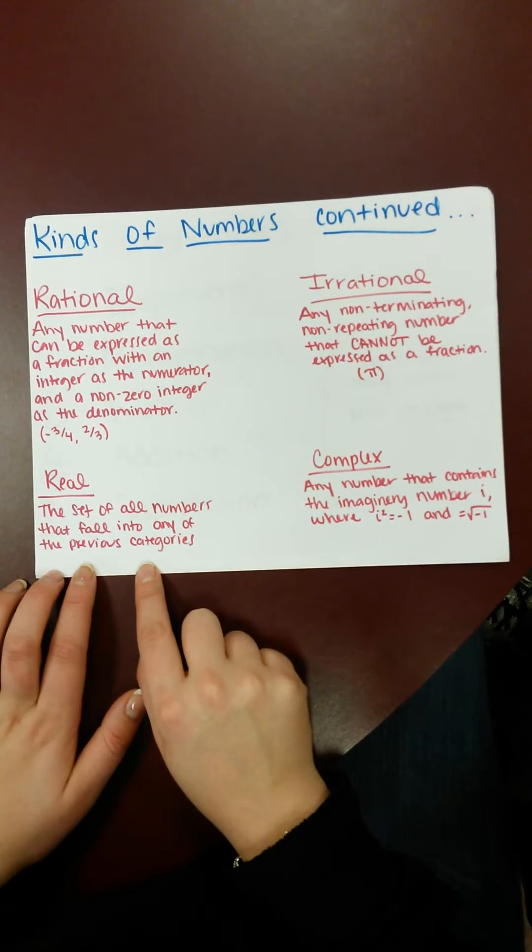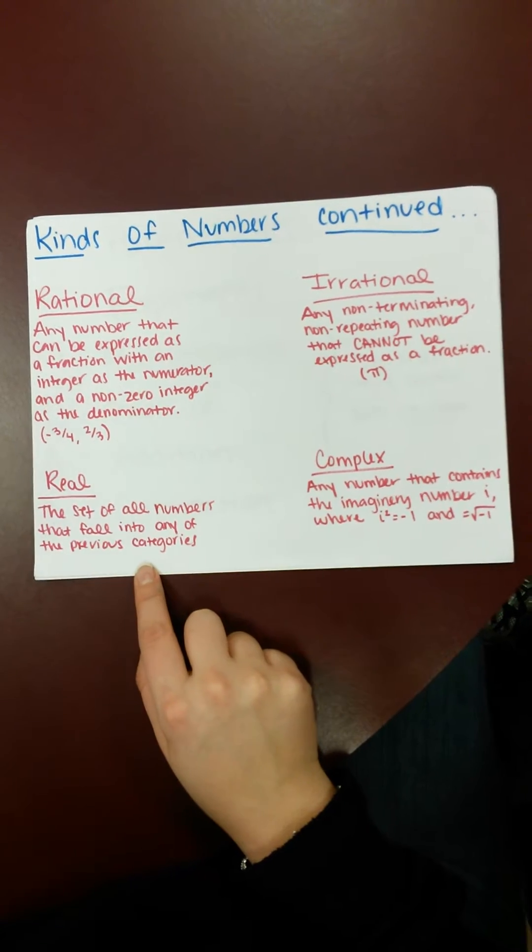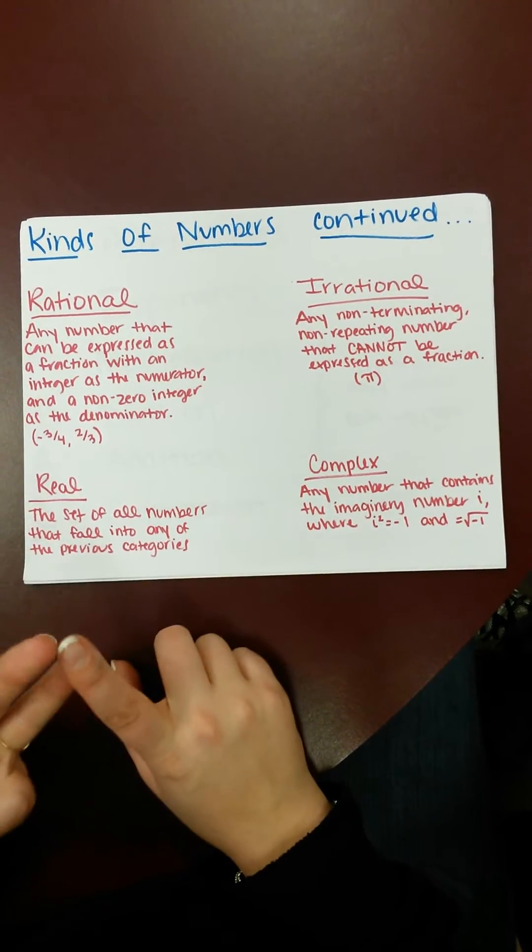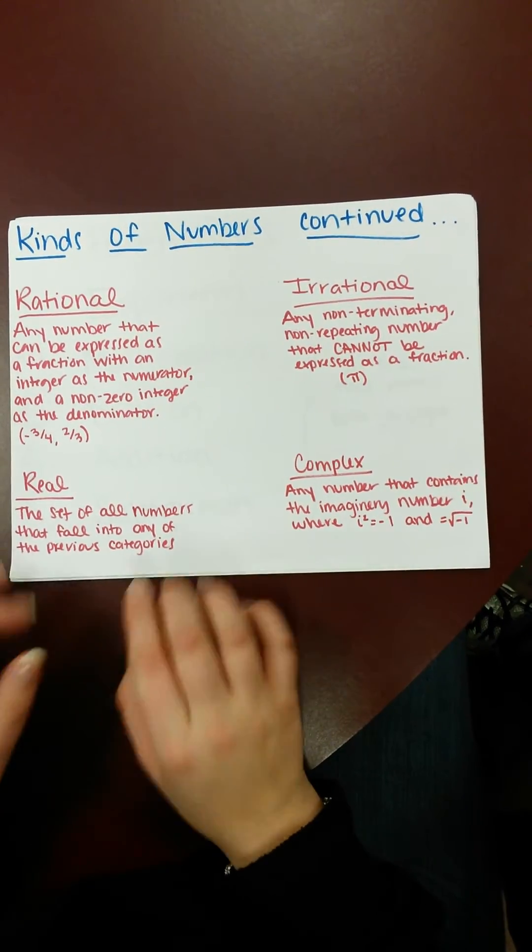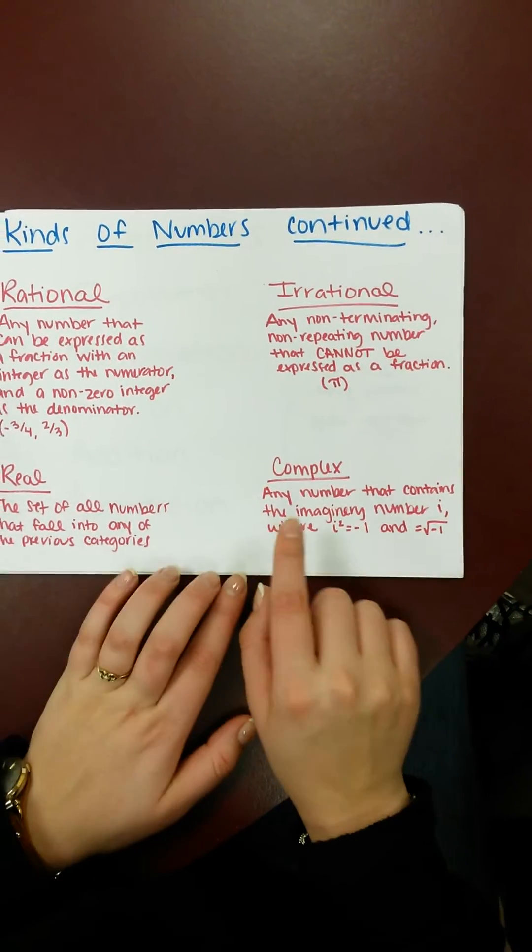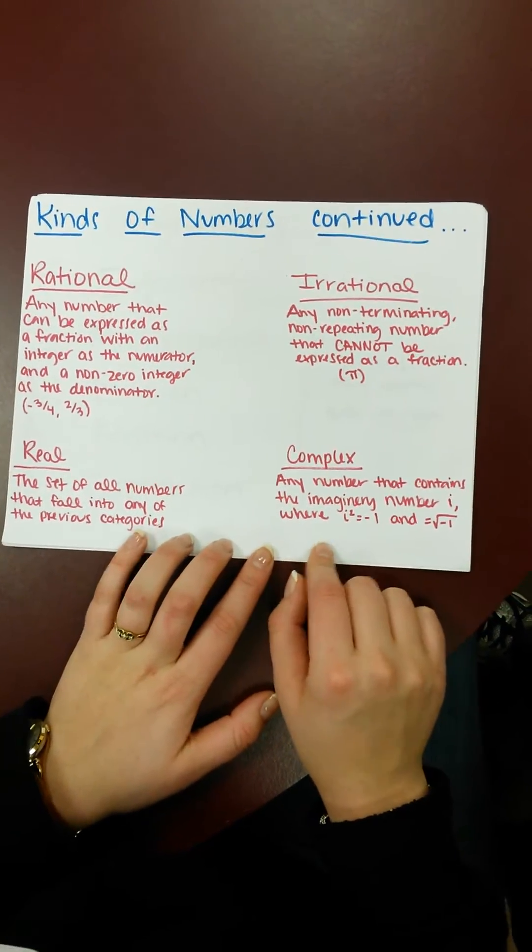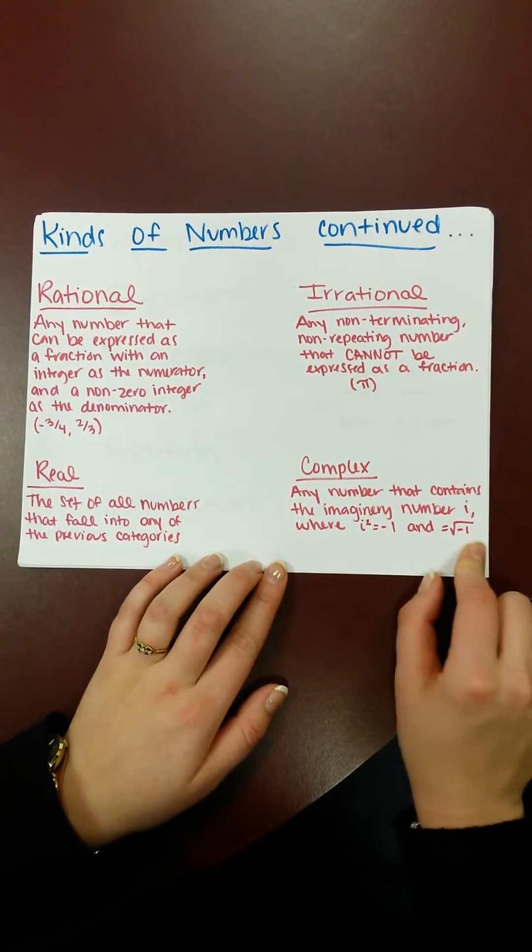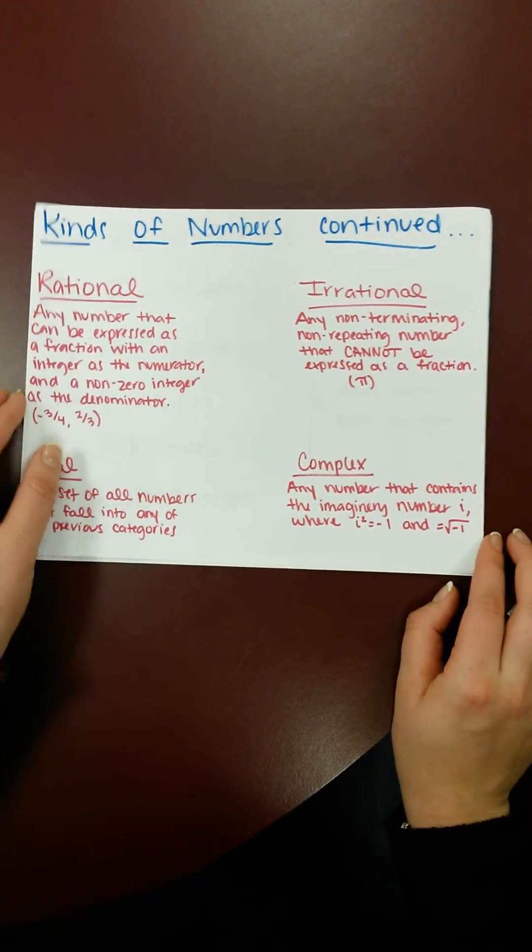Real numbers are the set of all real numbers that fall into any of these previous categories that we have mentioned so far, so your natural whole numbers, integers, rational, and irrational numbers. And the final is complex, and that's any number that contains the imaginary number i, where i squared is equal to negative 1, and the square root of negative 1.